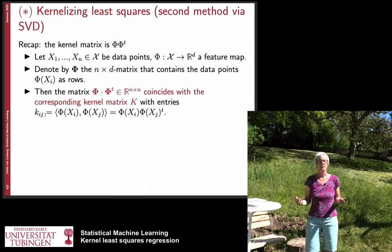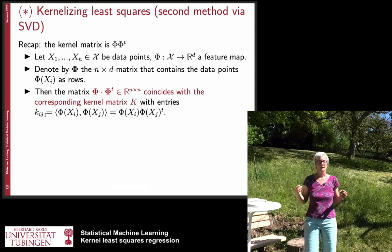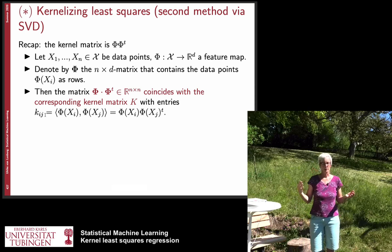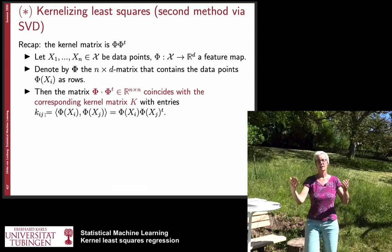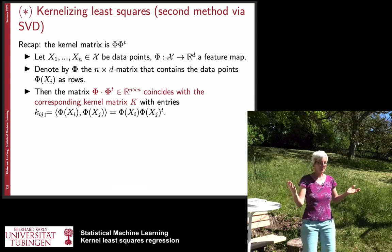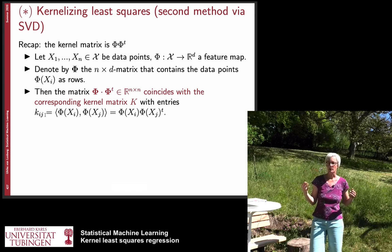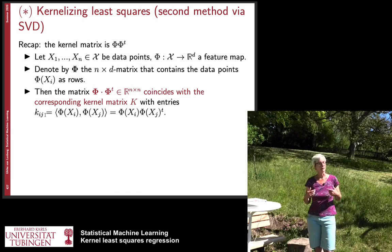There is a second method by which you can kernelize the least squares problem and it does not exploit the representer theorem in the first place which always, you always have the feeling it's a bit cheating, we already plug in the fact that we can use, that we have a linear expression in terms of kernel functions and that makes our life much easier.